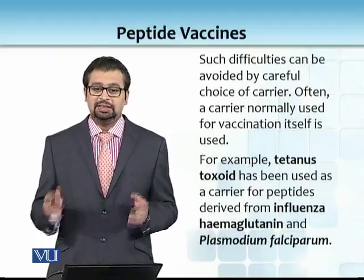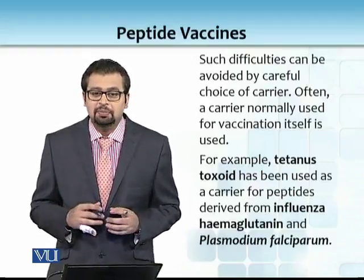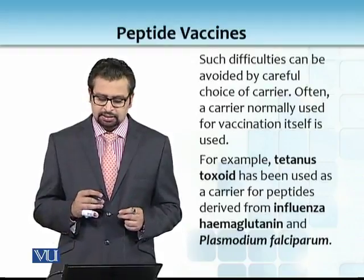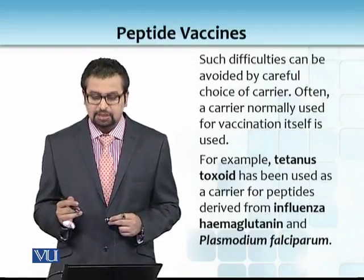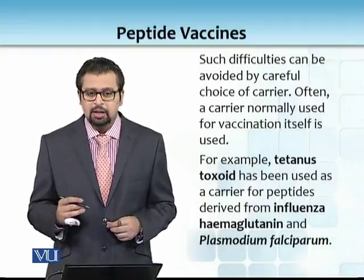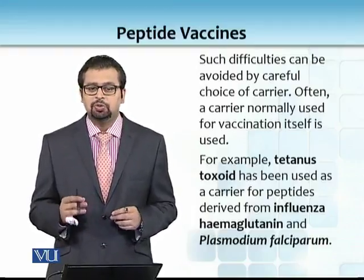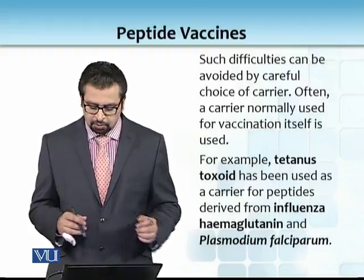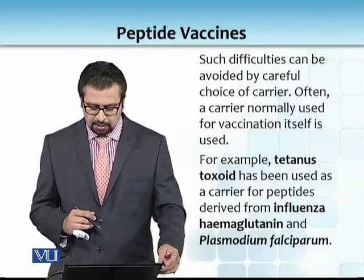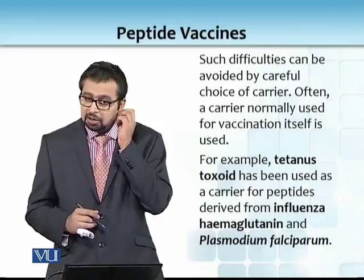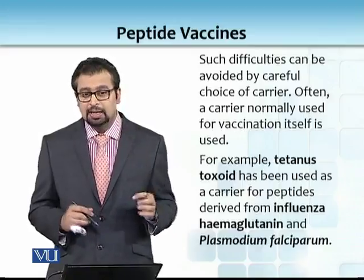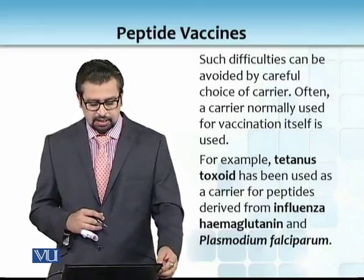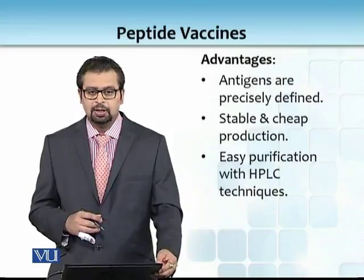But such difficulties can be avoided by careful choice of carrier. One very good example is of tetanus toxoid, which has been used as a carrier for peptides derived from influenza hemagglutinin and Plasmodium falciparum. Aapko Plasmodium yaad hai kya cause karta tha — malaria. So at the moment we don't have a vaccination against malaria, but at least it's in progress.